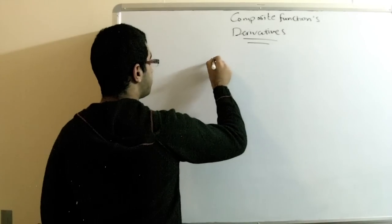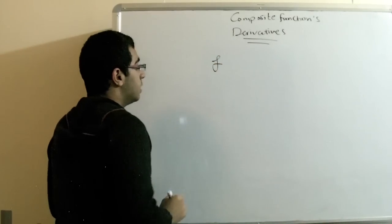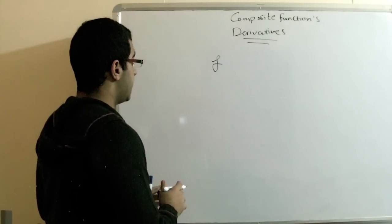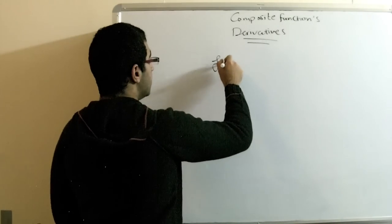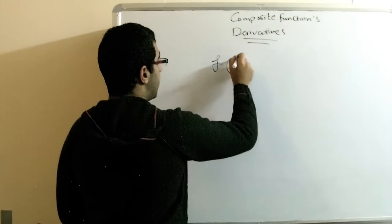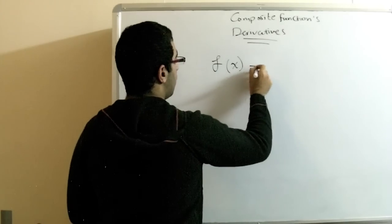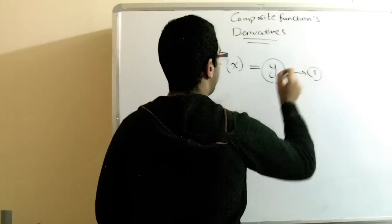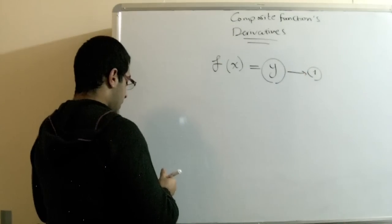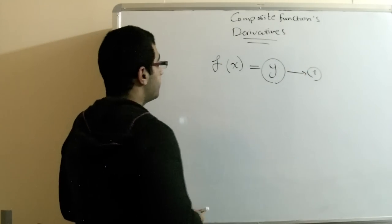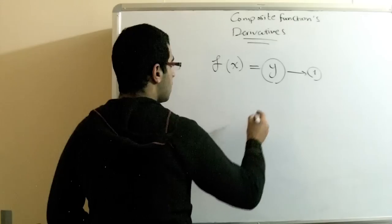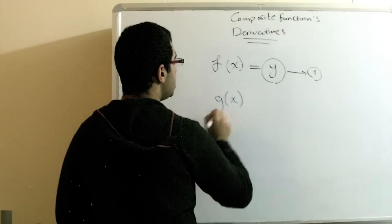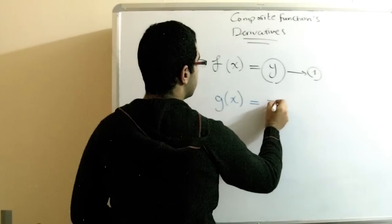Where our function is a function of another function. What I mean is, if we have f(x) equals y, this is our first function, and we have g(x) equals z.